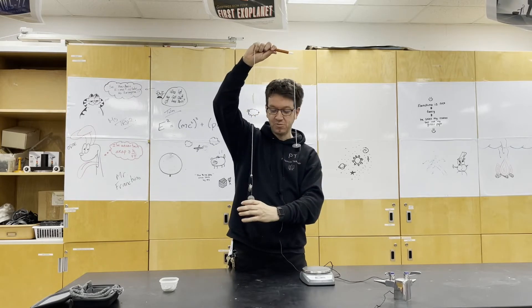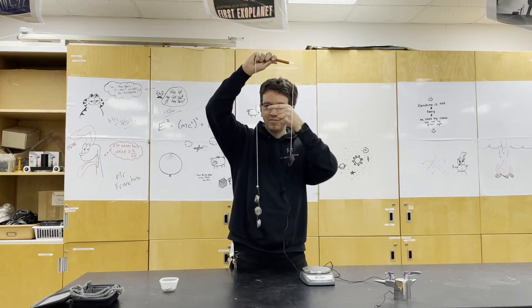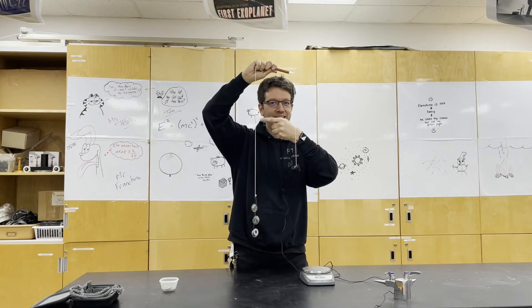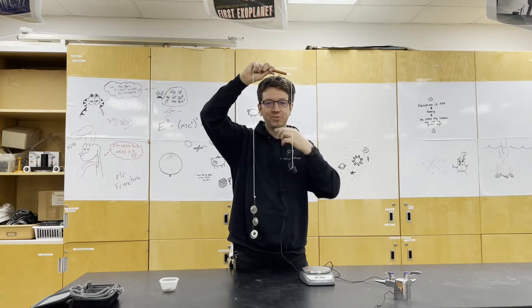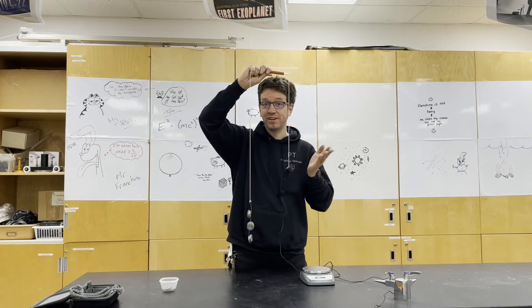All right. So now I've got 15 washers attached to this end. I've also got a piece of masking tape right here. This masking tape will let me see if the string is moving up or down.